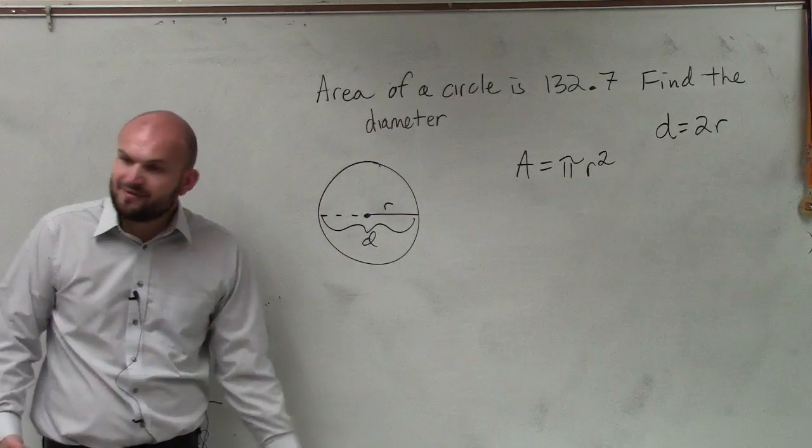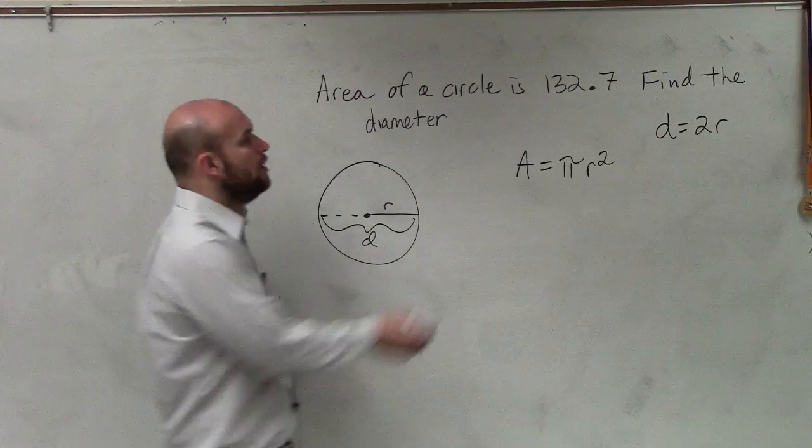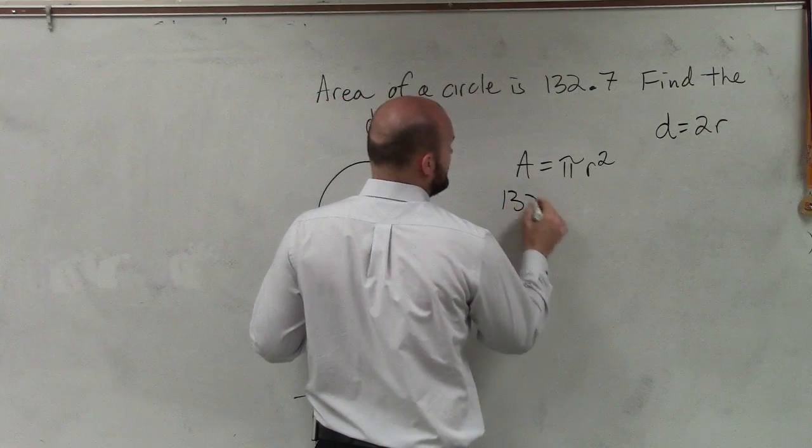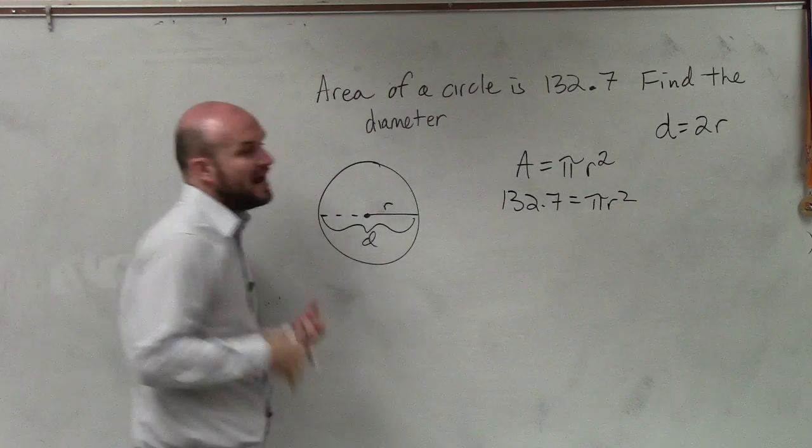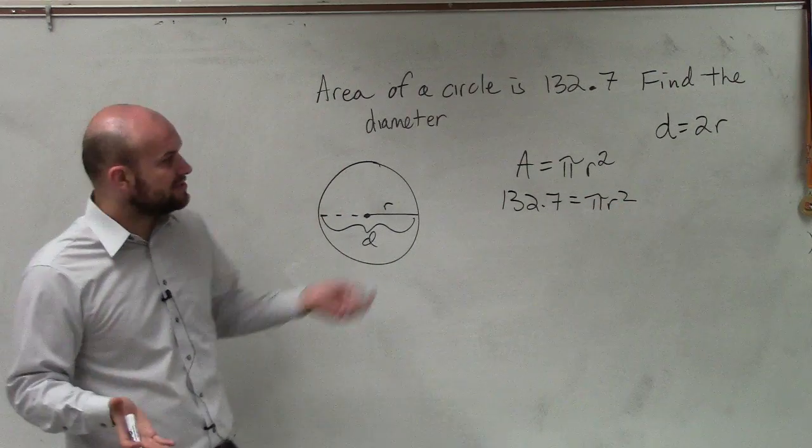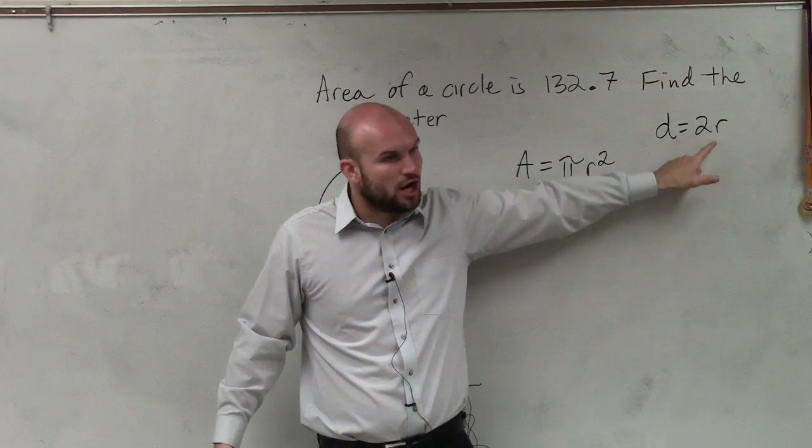So now we take the information that we're provided and plug it into our formula. We know what the area is. It's 132.7 equals pi r squared. They're asking us to find the diameter. However, to find the diameter, I need to find r.